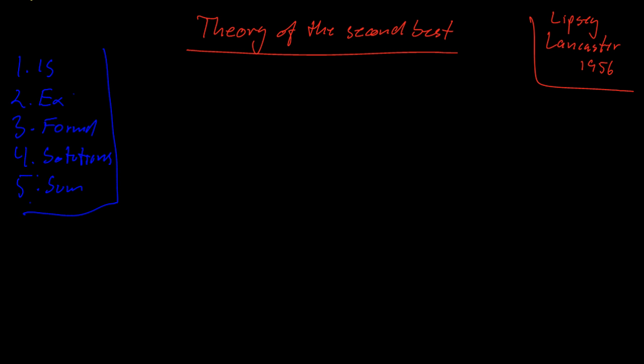Now, what is it? The general problem is that if you want to maximize something, there are lots of conditions that have to be fulfilled in order for something to be maximized. So you have many conditions. If one of those conditions is not fulfilled, then in general you should not try to fulfill all the other conditions. If you have a problem with one condition, you should not try to satisfy all the other conditions.